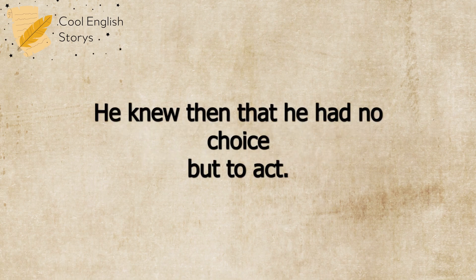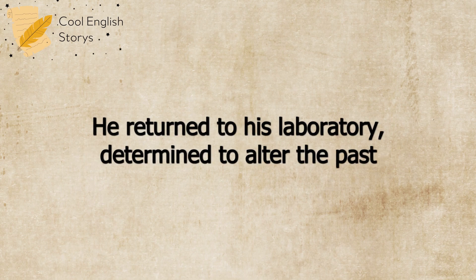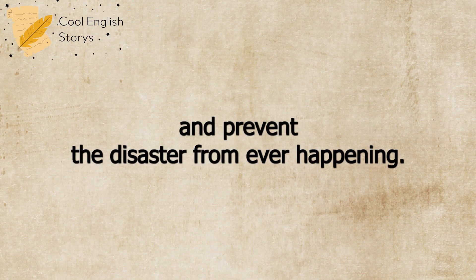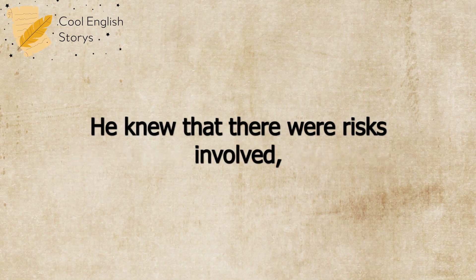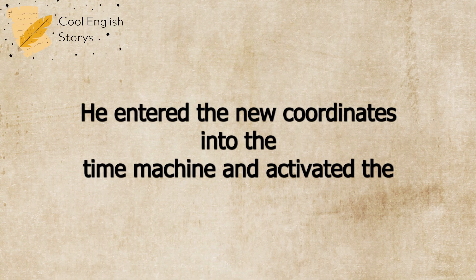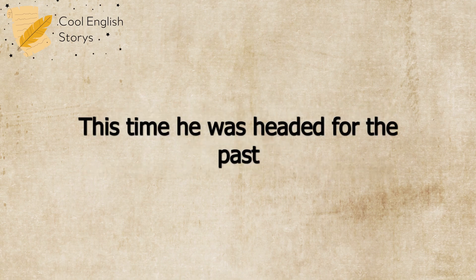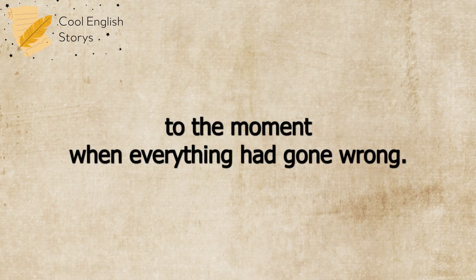He knew then that he had no choice but to act. He couldn't allow this future to come to pass. He returned to his laboratory, determined to alter the past and prevent the disaster from ever happening. He knew that there were risks involved, but he also knew that he couldn't sit back and do nothing. He entered the new coordinates into the time machine and activated the engines once again. This time, he was headed for the past, to the moment when everything had gone wrong.